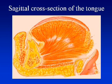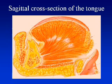When looking at an ultrasound image, it's important to understand the anatomy. This is an image of a sagittal cross-section of the tongue, which you will see in the ultrasound shortly.